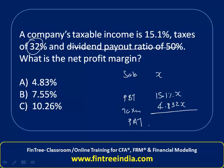That leaves us with 10.268, and therefore the net profit margin of the company is 10.26%. The correct answer is option C.